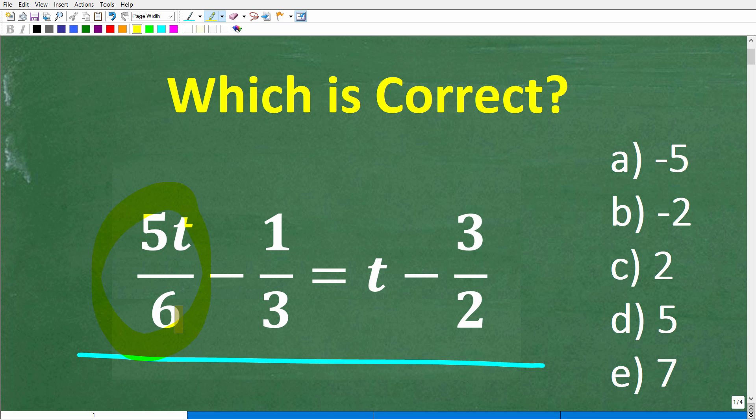We have 5t over 6 minus 1 third is equal to t minus 3 over 2, and we want to solve for t. Feel free to use a calculator, but even if you don't know algebra, you could still figure this out. This is a multiple choice question, so here are our possible answers. Select the right answer.